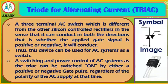TRIAC (Triode for Alternating Current) is a 3-terminal AC switch which is different from other silicon-controlled rectifiers in the sense that it can conduct in both directions — that is, whether the applied gate signal is positive or negative, it will conduct. Thus this device can be used for AC systems as a switch, as the TRIAC can be switched on by either a positive or negative gate pulse regardless of the polarity of the AC supply at that time.